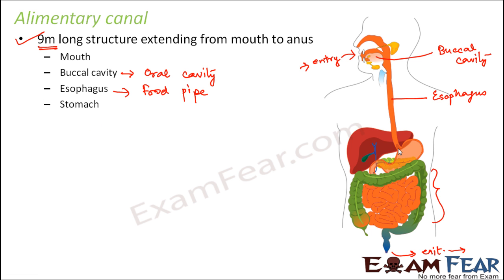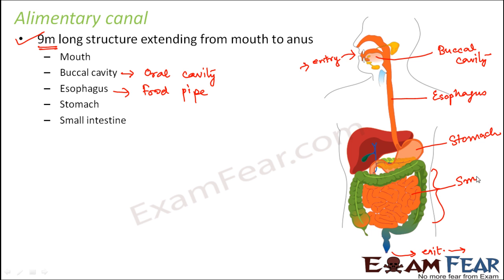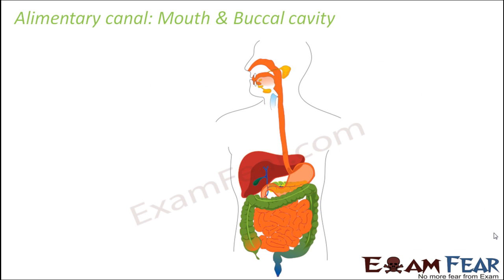The esophagus ends in a swollen bag-like structure called the stomach. From the stomach the tube extends into the small intestine — the extremely coiled yellow-colored structure you see here. This small intestine then goes into the large intestine, the green-colored coiled structure, which is called the large intestine.